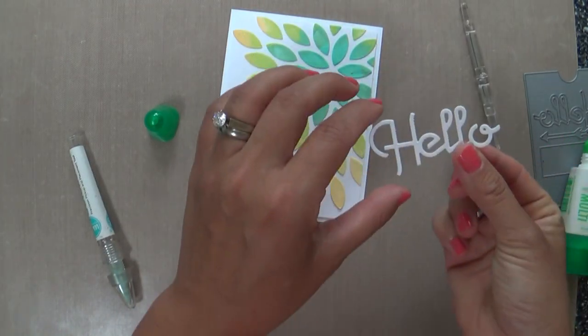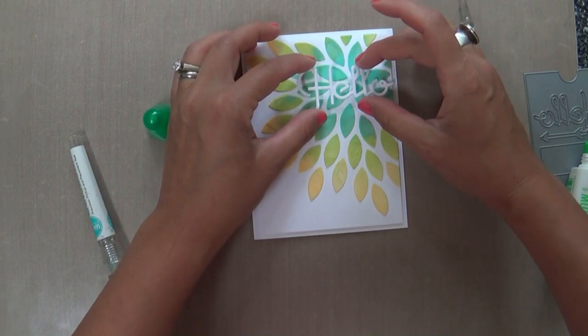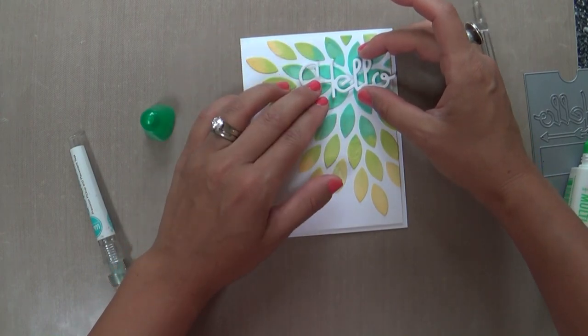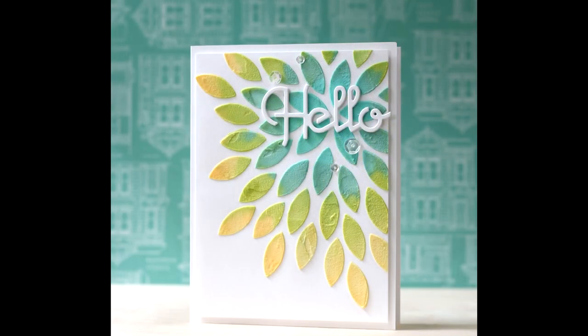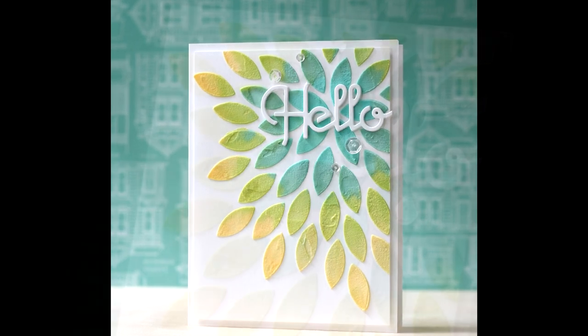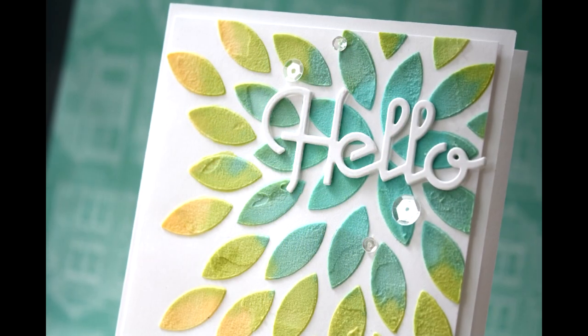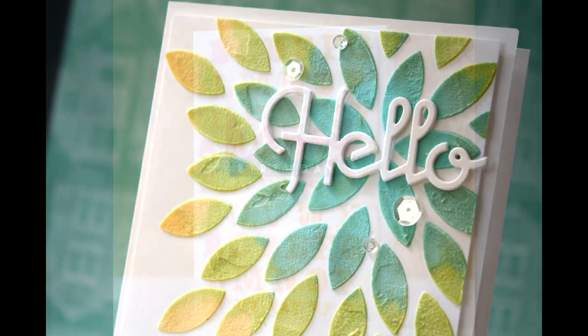So I'm going to take some Tombow Mono and just glue that right into the center of my bloom just like so and that's it. I added some clear sequins, some different sizes of pretty pink posh sparkling clear sequins. Those are my favorite.